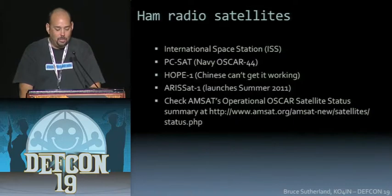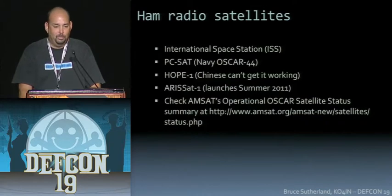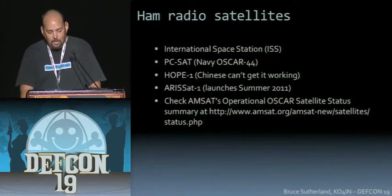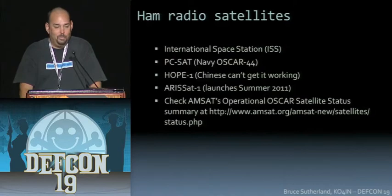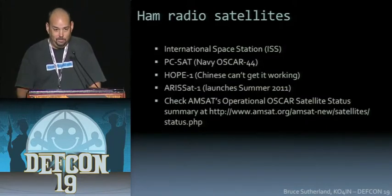There was another one launched by the Chinese called Hope One, but they can't seem to get it working. That's unfortunate because it has a lot of different radio equipment on it, including the digipeater function. All it does right now is transmit its call sign in Morse code — so if you hear that, you found it, but that's about all you can do with it.